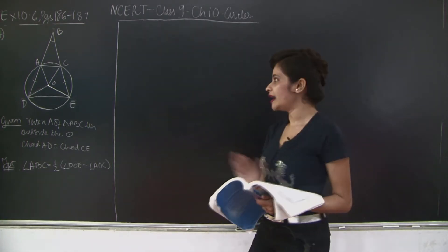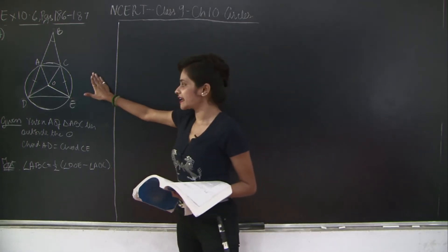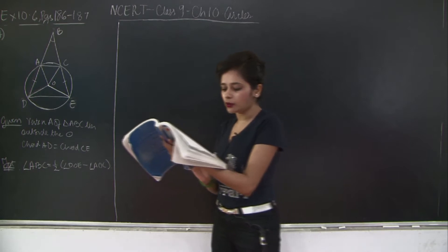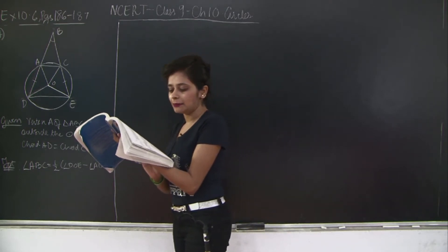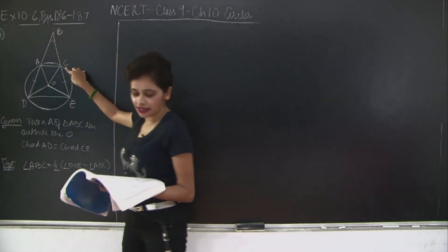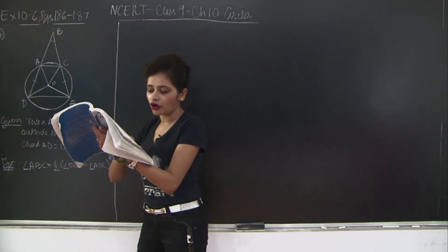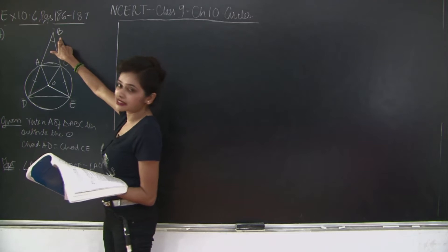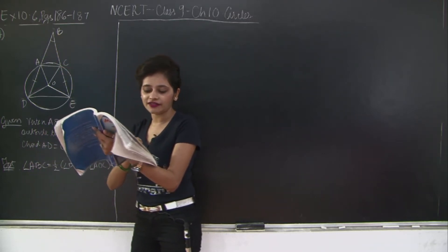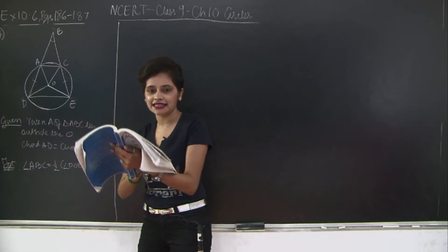I'll read out the question for you and then we will relate it to the diagram given and prove that. So the fourth question reads: let the vertex of triangle ABC be located outside a circle. So I have triangle ABC wherein the vertex of a triangle, so I am saying vertex B, is lying outside the circle, and let the sides of the angles intersect chords AD and CE.